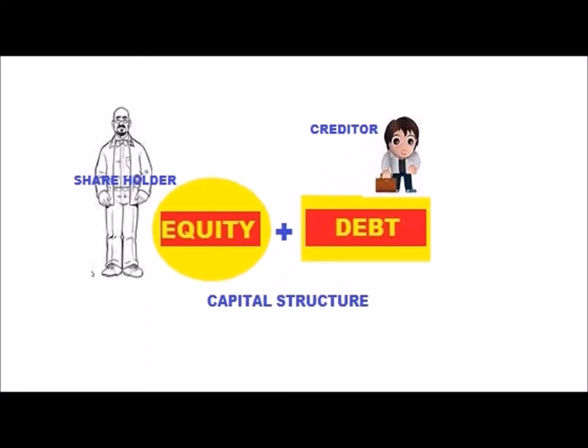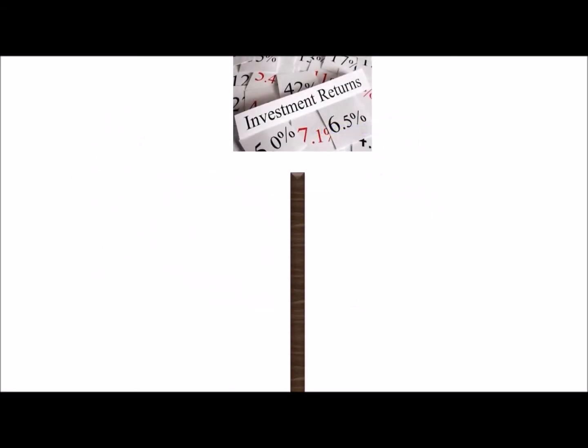This mix of debt and equity in the total capital of the company is called capital structure. The person holding equity of the company is called a shareholder or owner, and the person holding debt of the company is called a creditor.